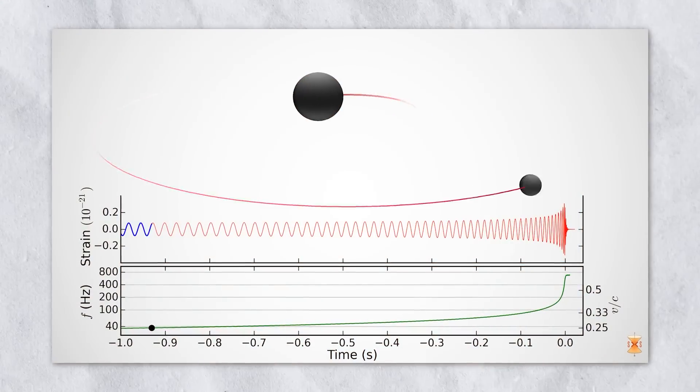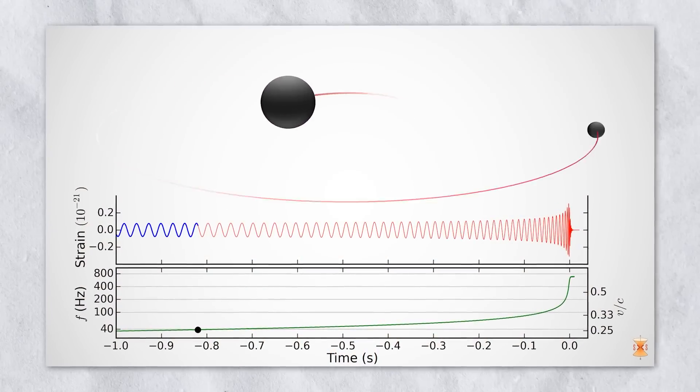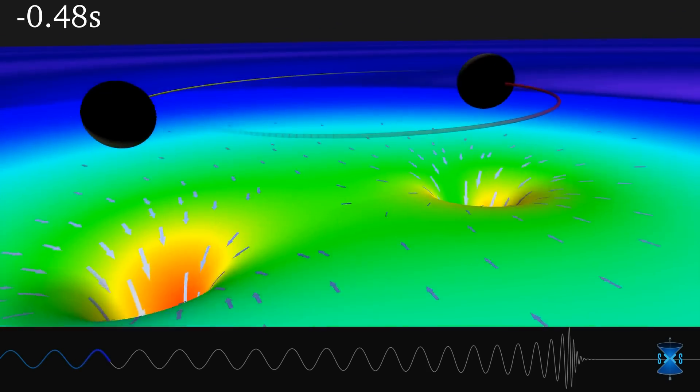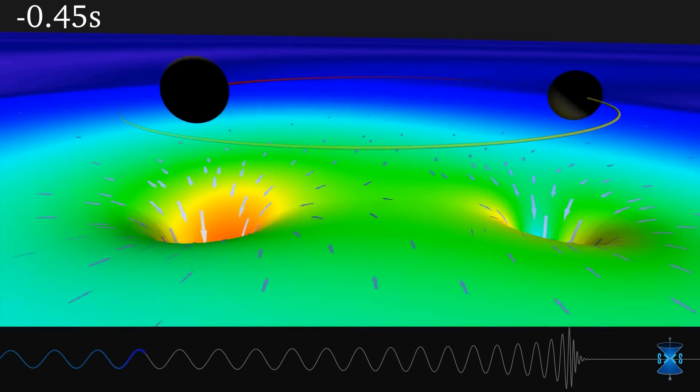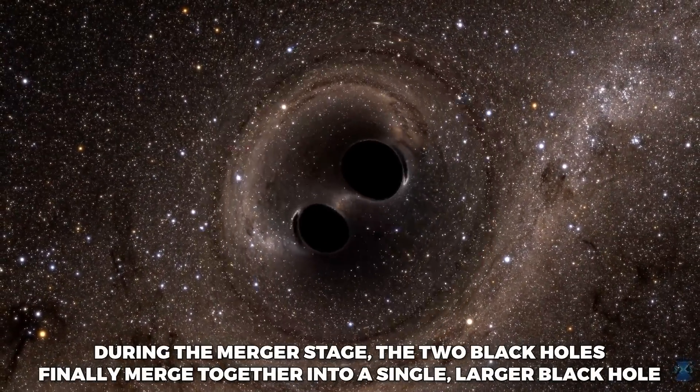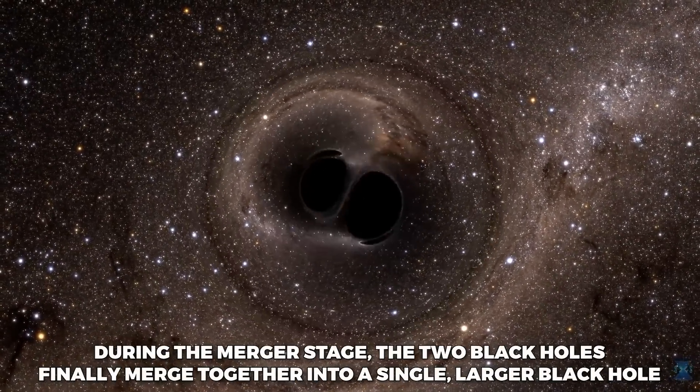During the in-spiral stage, the two black holes orbit around each other, emitting weak gravitational waves. As they get closer together, the waves become stronger and the black holes spiral faster. During the merger stage, the two black holes finally merge together into a single larger black hole.